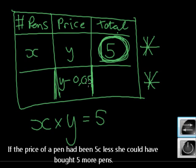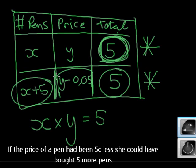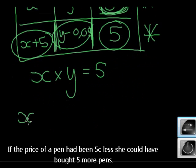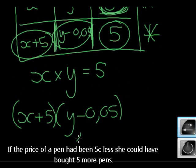Then she would have been able to buy five more pens. So how many pens would she have been able to buy? x plus 5. And how much would this whole transaction cost her? It will still cost 5 Rand because if the pen was 5 cents less, she would have been able to buy 5 more pens with the original 5 Rand that she had. Does that make perfect sense to you?